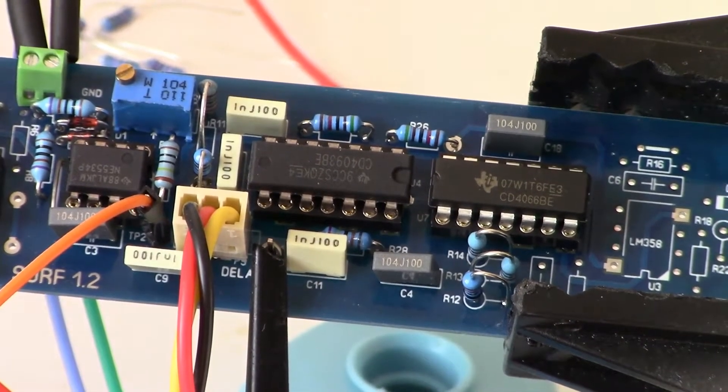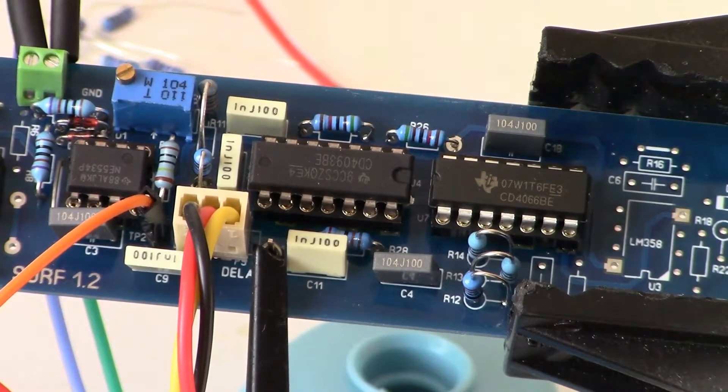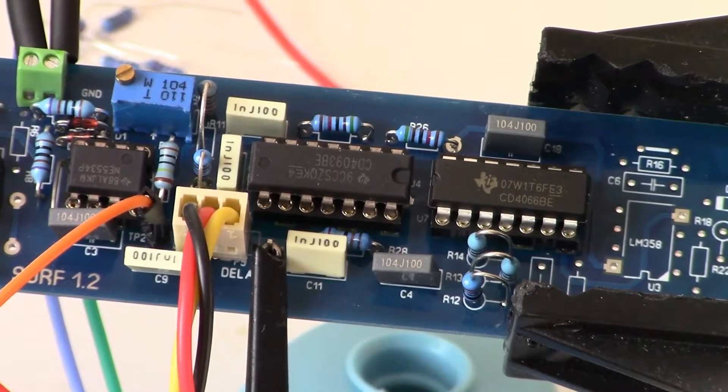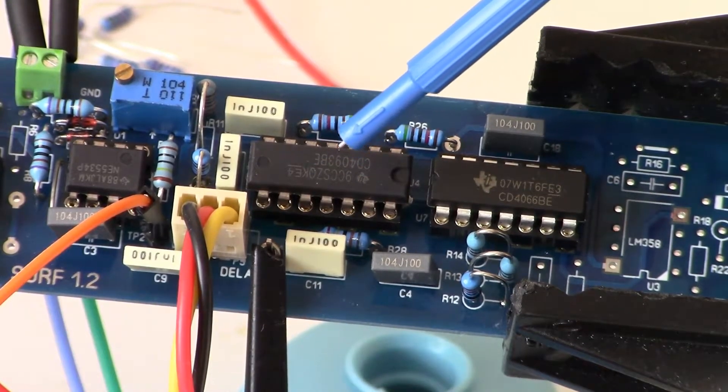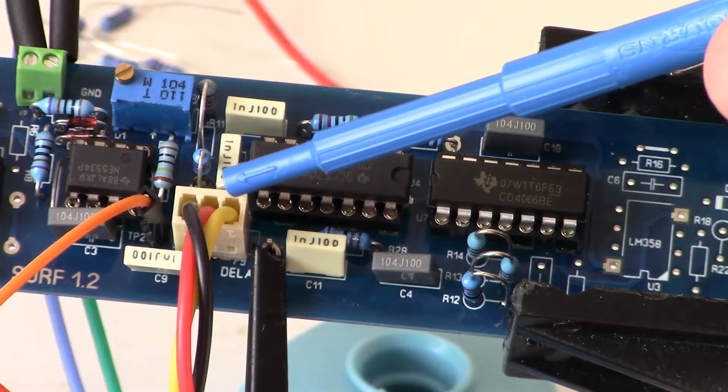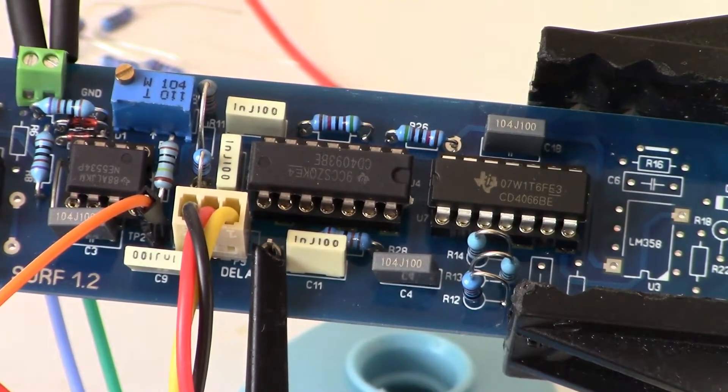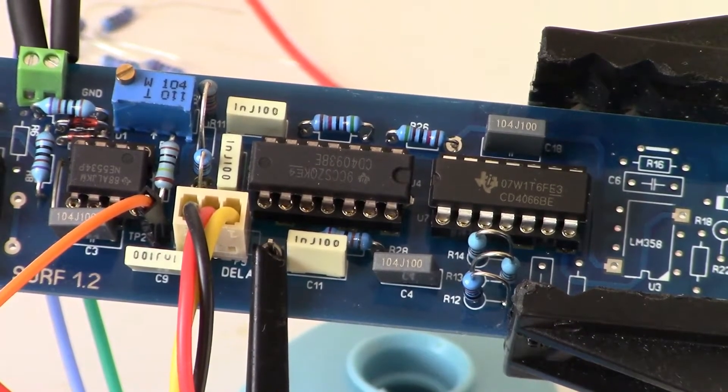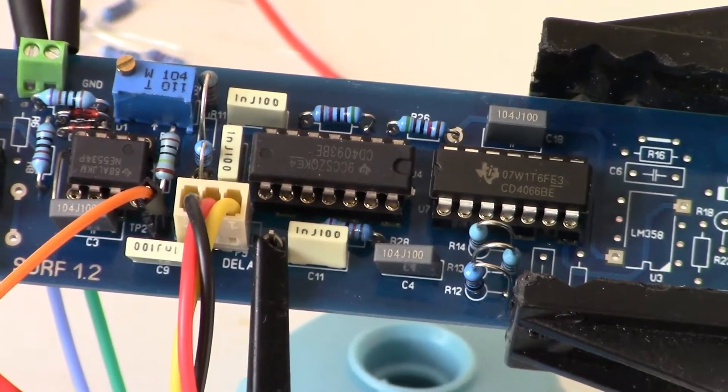Alright guys, welcome back to installment number four of the surf PI longboard. Today we're looking at the sampling pulses and the chip that's involved with that, and also we'll look a little bit at what feeds into the integrator. These are the two chips: we have the 4093 and the 4066, and here you see the potentiometer that's part of this block. I'll show you what the different waveforms look like, the different pulses, and then we'll take a look at the schematic and I'll try to do a little bit of explanation about what goes on there.